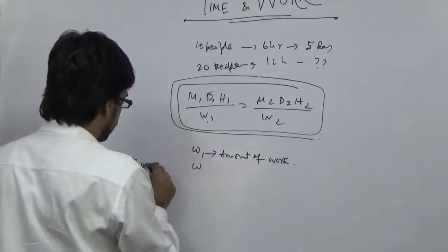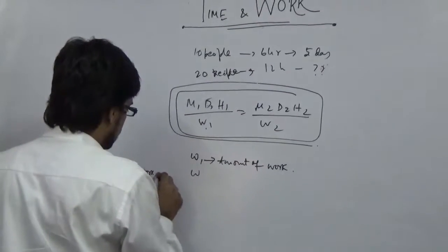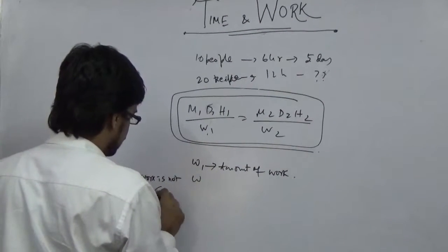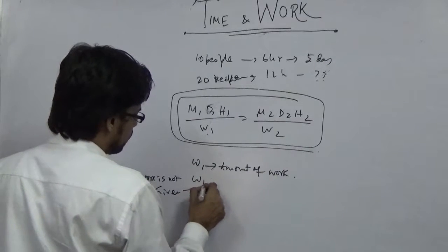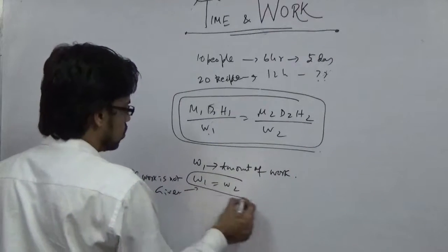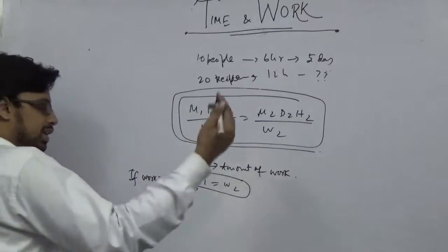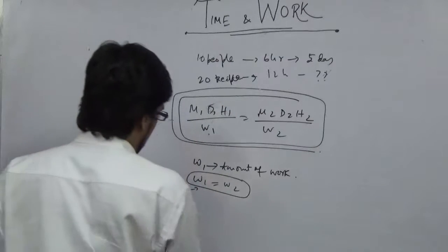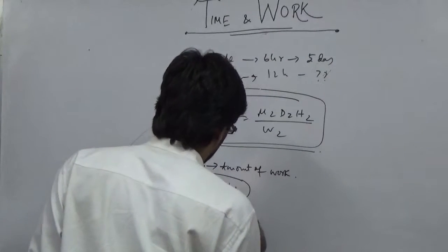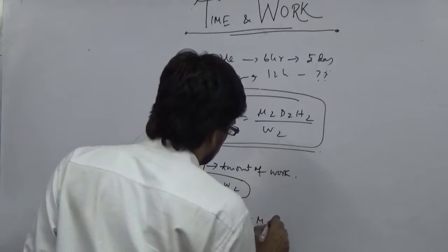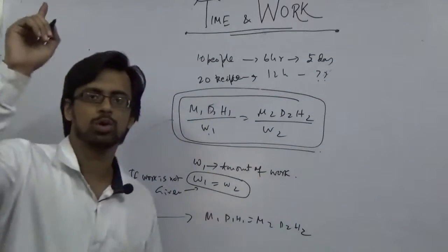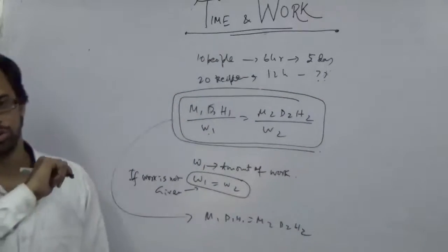If work is not given, then we simply assume W1 equal to W2. So our formula is M1, D1, H1 equal to M2, D2, H2, because you have W1 equal to W2.